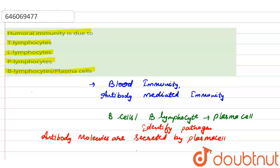The first option, T lymphocyte, is responsible for cell-mediated immunity, so it is wrong. The second option, L lymphocyte, is also wrong. The third option, P lymphocyte, is also wrong. The fourth option, B lymphocyte and plasma cell, is correct, because plasma cells deal with antigens from pathogens.